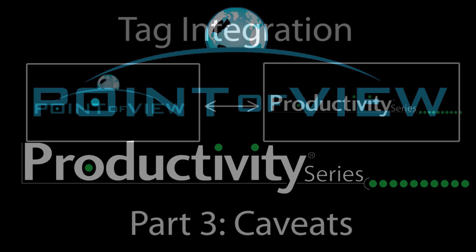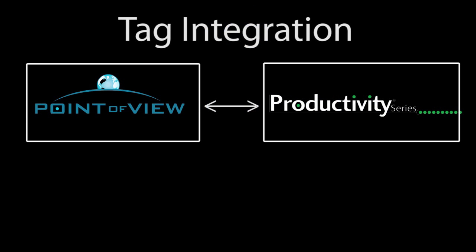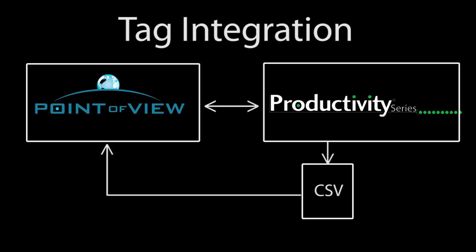In the previous video, we saw that tag integration was easy – you just export a CSV file from the Productivity Suite project, then tell POV where to find that file, which you would normally put in your POV project folder.